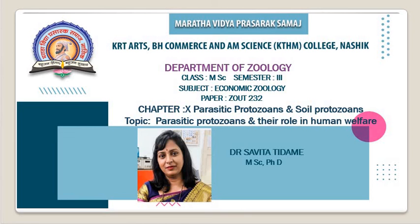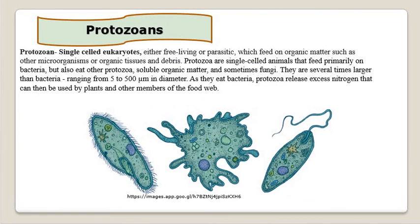Protozoans are basically unicellular eukaryotic organisms. You might have seen amoeba, euglena, and paramecium. Protozoans are single-celled eukaryotic animals. Eukaryotic means bearing a true nucleus as well as a number of other cell organelles, such as mitochondria, Golgi complex, ribosomes, and endoplasmic reticulum.